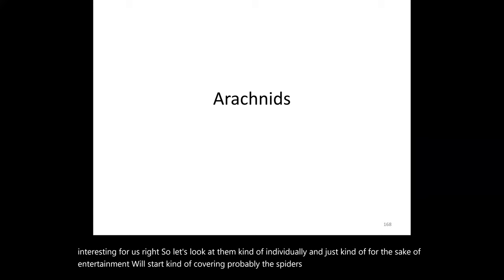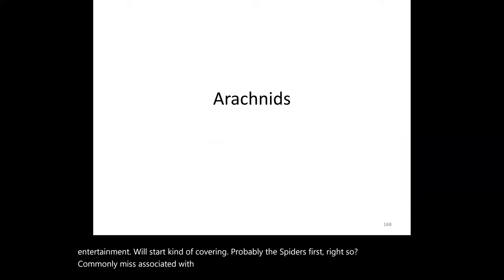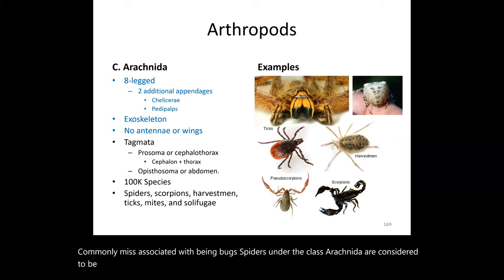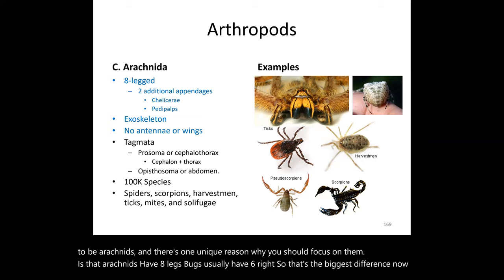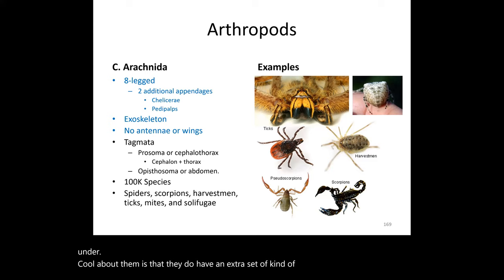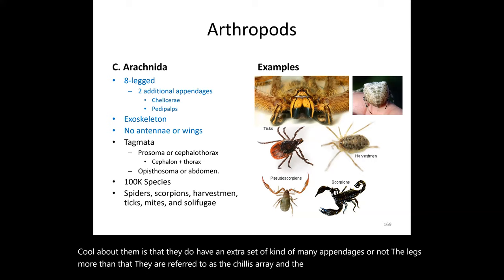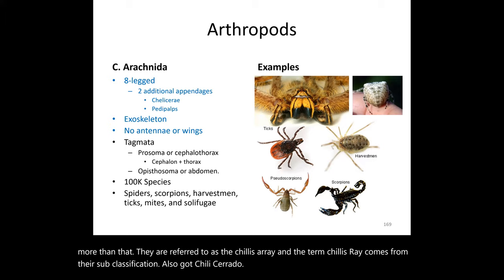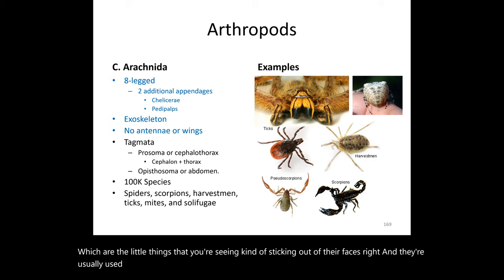Spiders are commonly misassociated with being bugs, but under class Arachnida, they are arachnids. The key difference is that arachnids have eight legs while bugs usually have six. Arachnids also have an extra set of mini appendages called chelicerae — these come from their subclassification Chelicerata — which are the little structures sticking out of their face, usually used for eating.